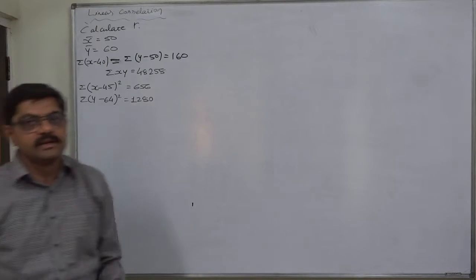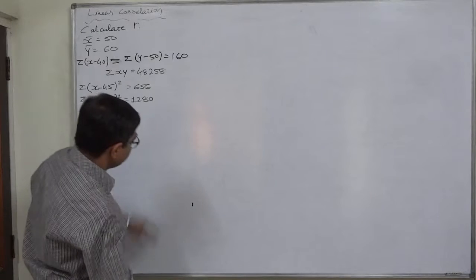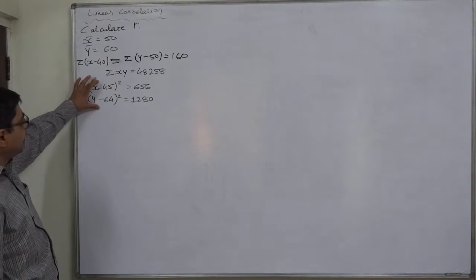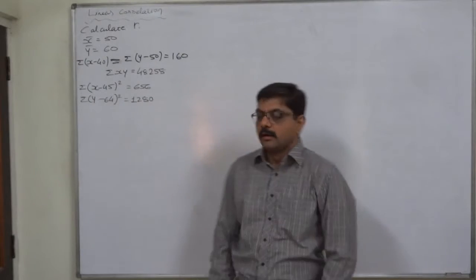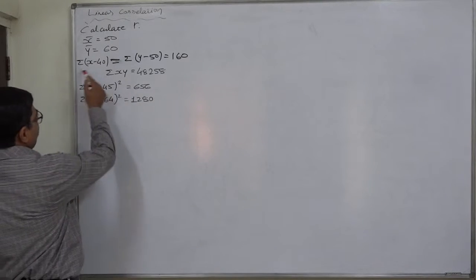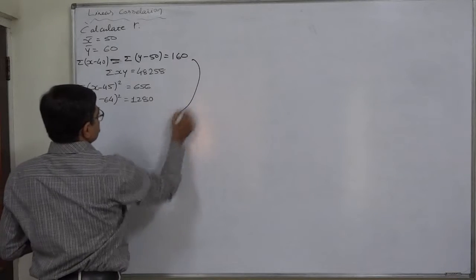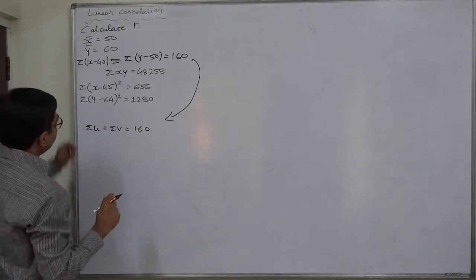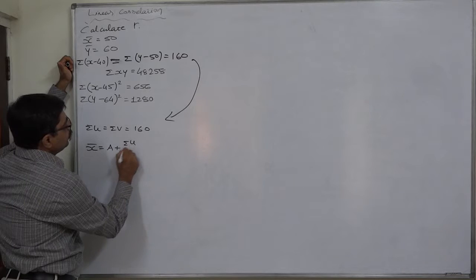These two are not sigma u-squared and sigma v-squared. Now, how to calculate the coefficient of correlation between x and y? This cannot be treated as the data available for u as well as v. The only way to solve this problem is to open these brackets and find out the values. But the first thing is there is no information about n, so we have to first find out n. For calculation of n, we use x-bar = a + (sigma u / n).